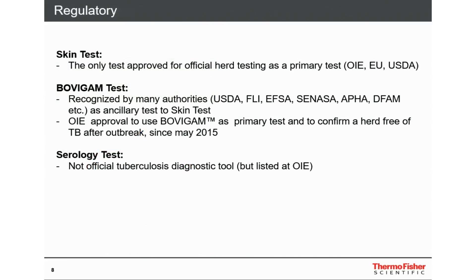A short summary of the regulatory issues: the skin test is the only approved test for official herd testing. The Bovigam interferon gamma test is recognized by many authorities and has OIE approval as a primary test and to confirm a herd free of TB after an outbreak since May 2015. The serological test, in general, is not an official tuberculosis diagnostic tool, but it is listed at the OIE, as I mentioned.